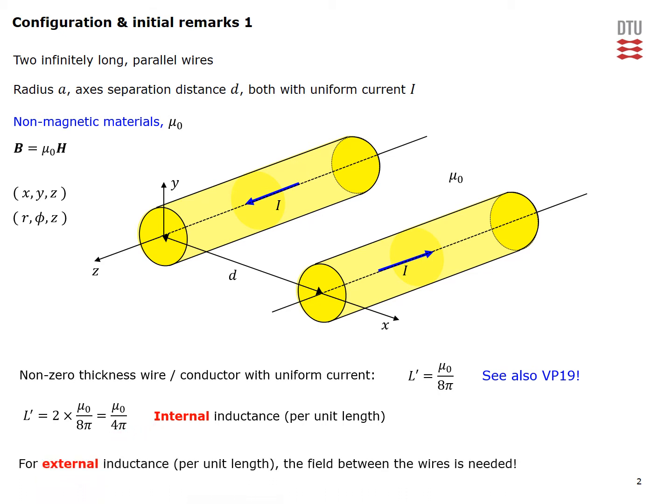In order to determine the external inductance we have to use the field between the wires and find the magnetic flux which is enclosed by this current flowing in these two wires.